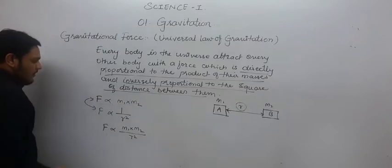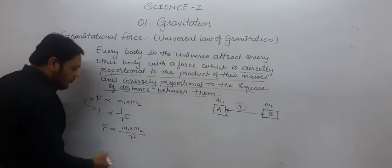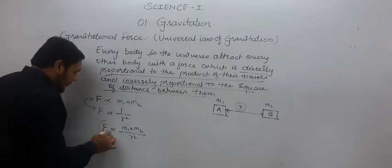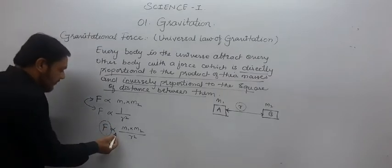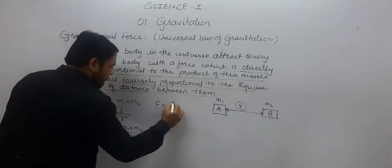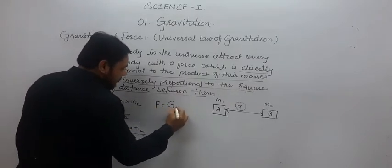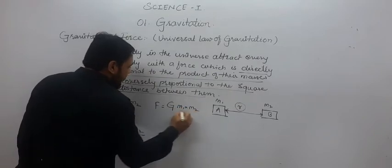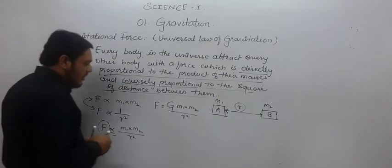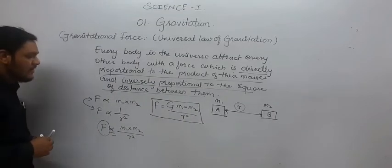If we combine these two mathematical statements, we get F proportional to m1 multiplied by m2 upon r square. In order to get the value of F, we remove the proportionality sign by introducing a constant G. So, F is equal to G times m1 multiplied by m2 divided by r square. Student, this is the formula for gravitational force, derived from Newton's universal law of gravitation.